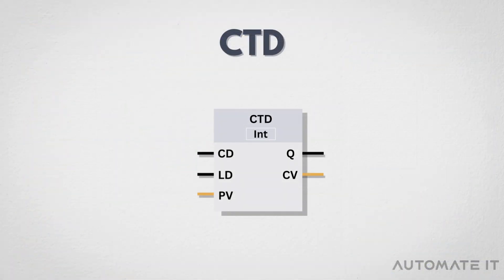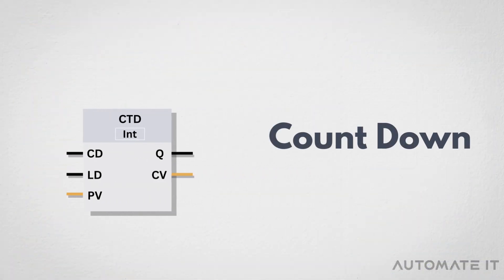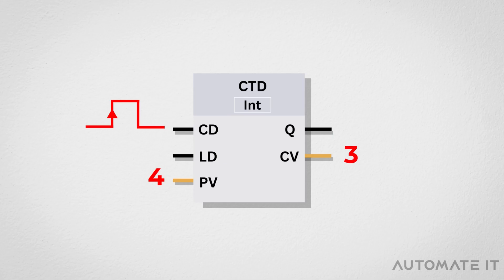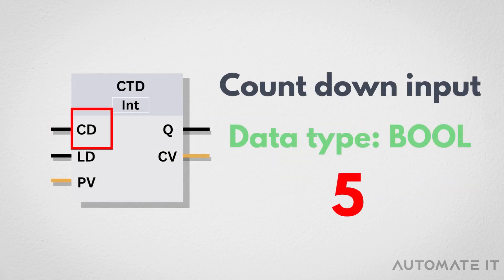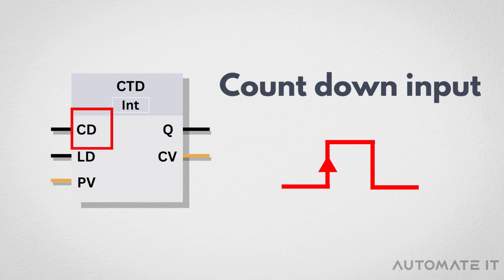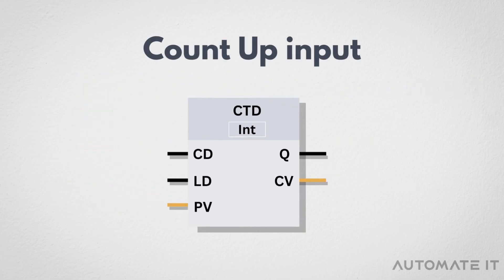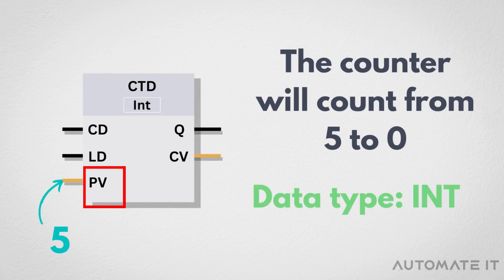Now let's move to the CTD Counter, which stands for Countdown. It decrements its value each time it receives a positive edge input signal. In TIA Portal, the CTD Counter has 3 inputs and 2 outputs. CD: this is the input that triggers the counter to decrement its value. It is usually a positive edge-triggered signal. When this input receives a positive edge, the counter value decreases by 1. PV: this input represents the value for which output Q is set.